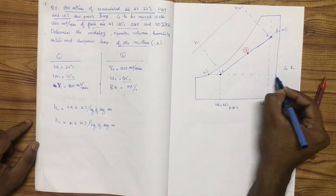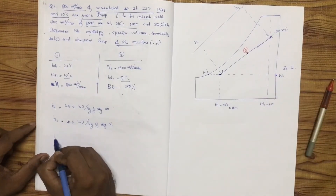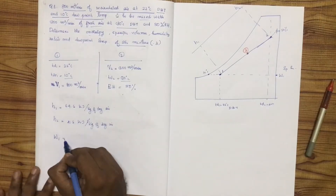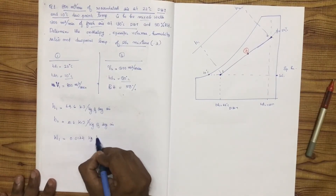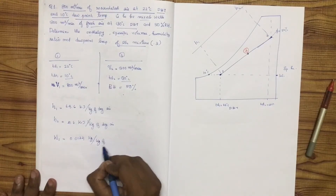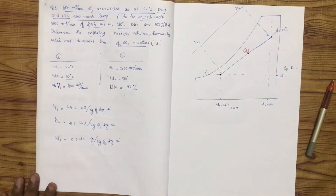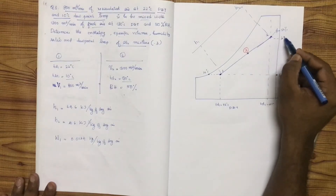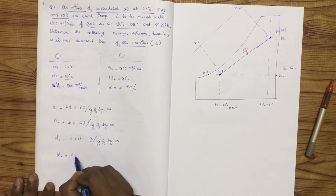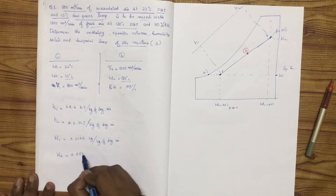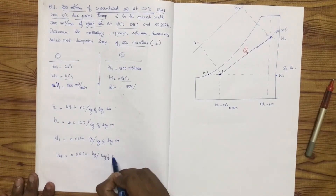From the psychrometric chart: W1 is equal to 0.0134 kg per kg of dry air, and W2 is equal to 0.0076 kg per kg of dry air.